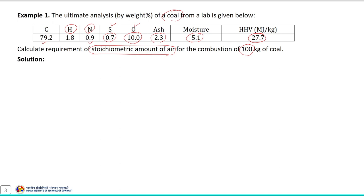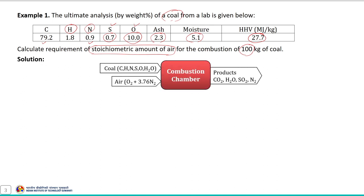Based on this given data, we need to calculate the requirement of stoichiometric amount of air required for the combustion of 100 kg of coal sample. We need to calculate the stoichiometric amount of air required for the complete combustion of the given coal sample to produce the product.